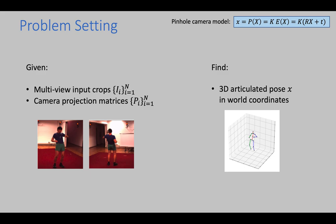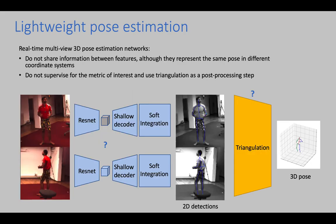Given calibrated and synchronized multi-view input of a single individual, our goal is to find its 3D articulated pose. Real-time solutions to multi-view pose estimation do not share information between views and use triangulation only as a post-processing step.